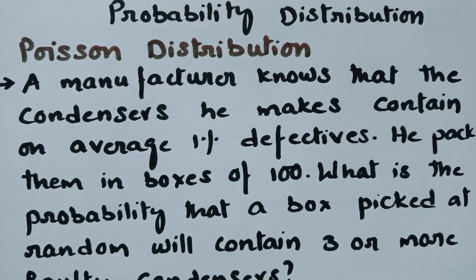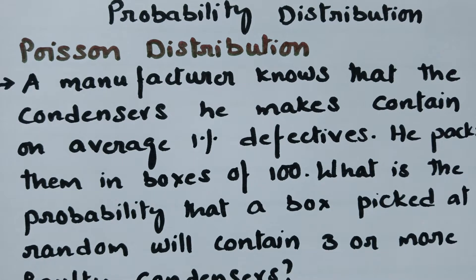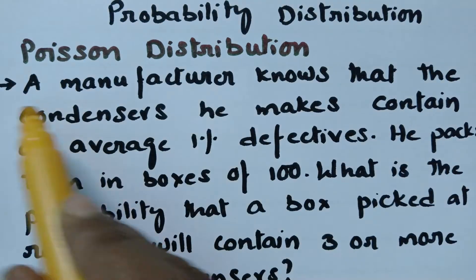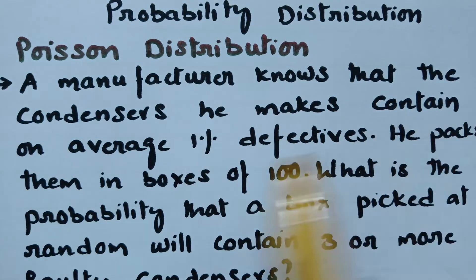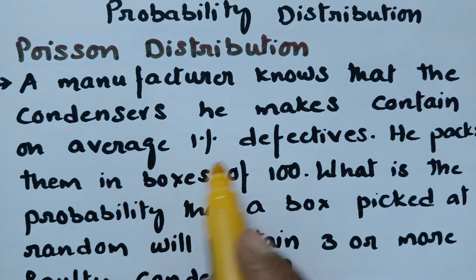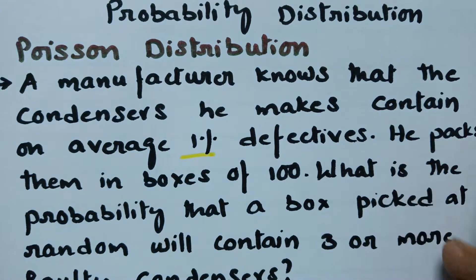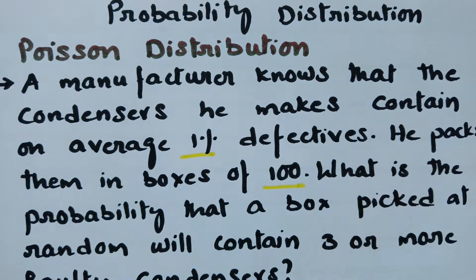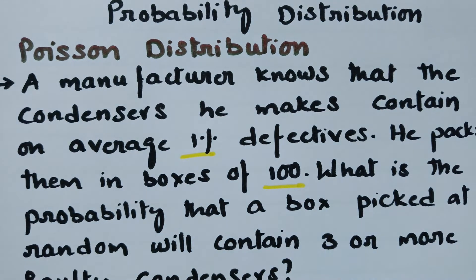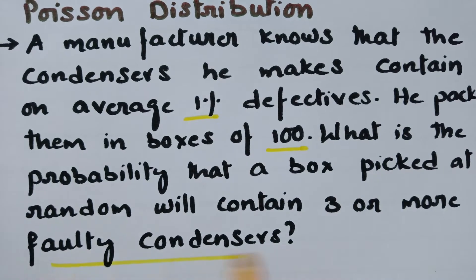This video is on Poisson distribution. A manufacturer knows that the condensers he makes contains on average 1% defectives. He packs them in boxes of 100. What is the probability that a box picked at random will contain 3 or more faulty condensers?